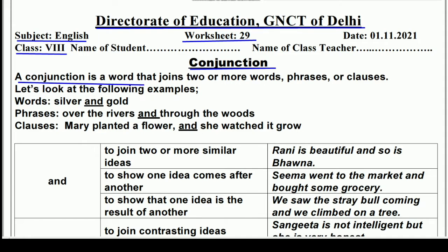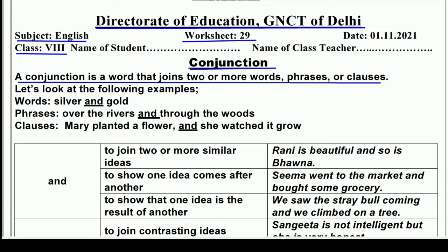A conjunction is a word that joins two or more words, phrases, or clauses. We will know the meaning of conjunction in this worksheet. Conjunctions can be used to join two or more words, phrases, or clauses. Let's look at the following examples.